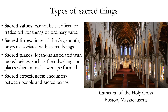There are many types of sacred things. Sacred value cannot be sacrificed or traded off for things of ordinary or lesser value. There are sacred times — times of the day, week, month, or year associated with sacred beings. Sacred places are locations like a temple, church, synagogue, or mosque associated with sacred beings, where they dwell or where miracles were performed. Locations connected to a religion's history — where a prophet received revelation or a miracle occurred — can also be sacred. And there are sacred experiences: encounters between people and sacred beings.